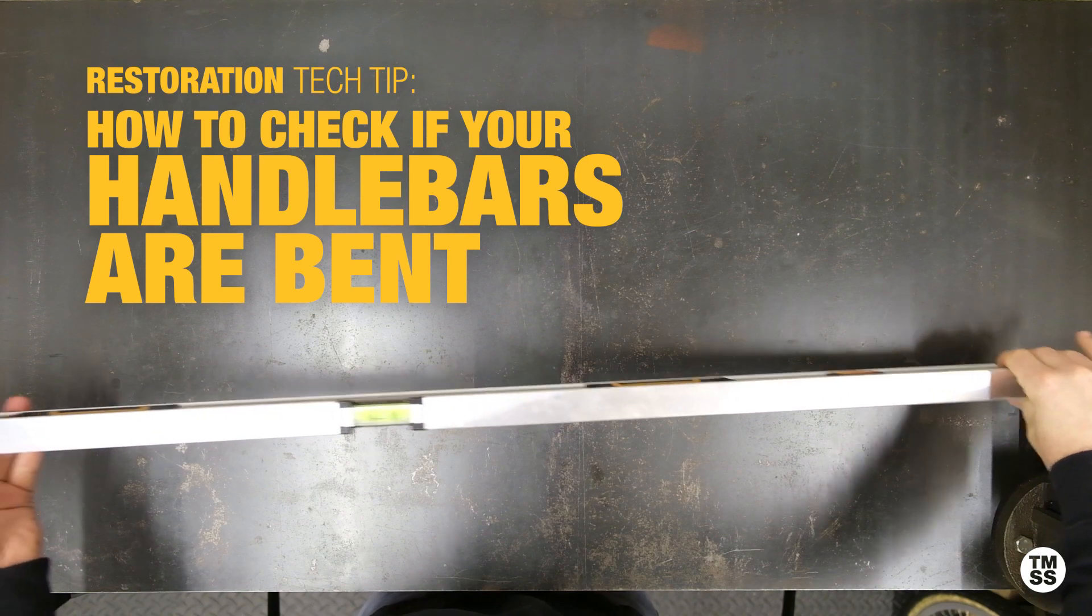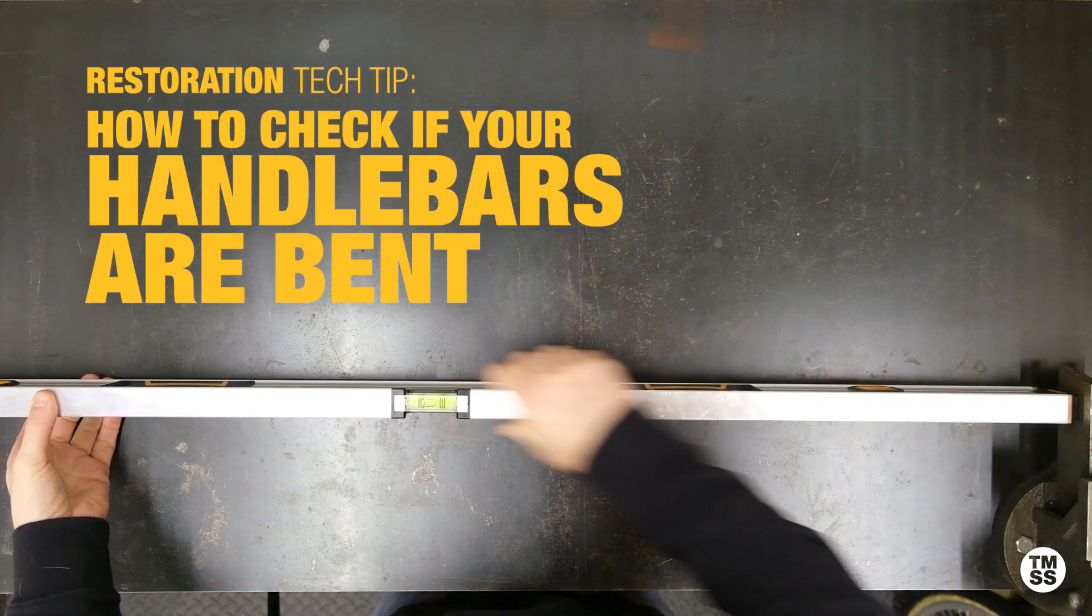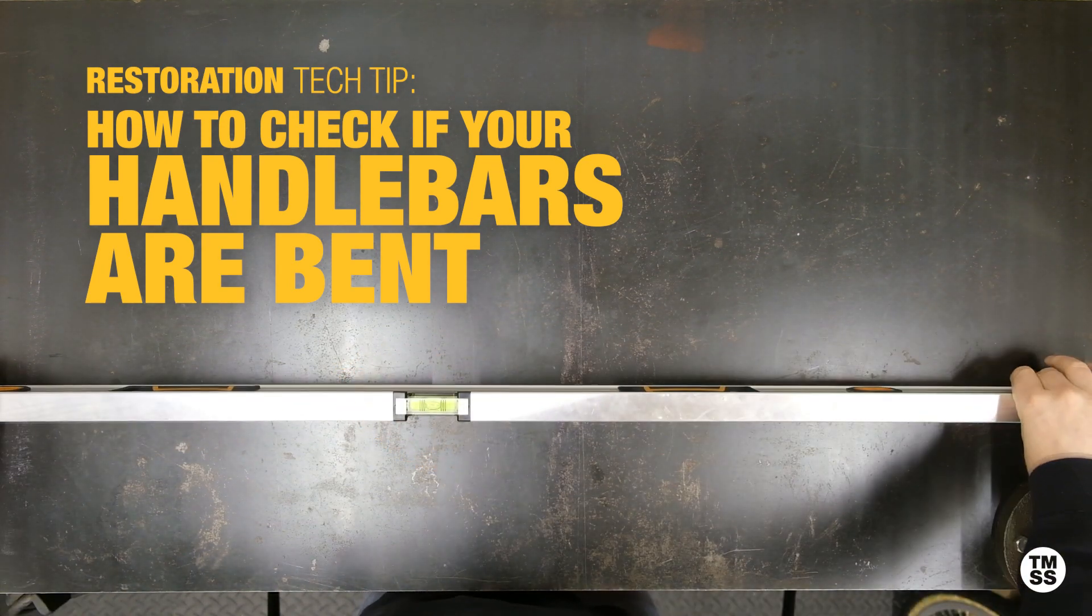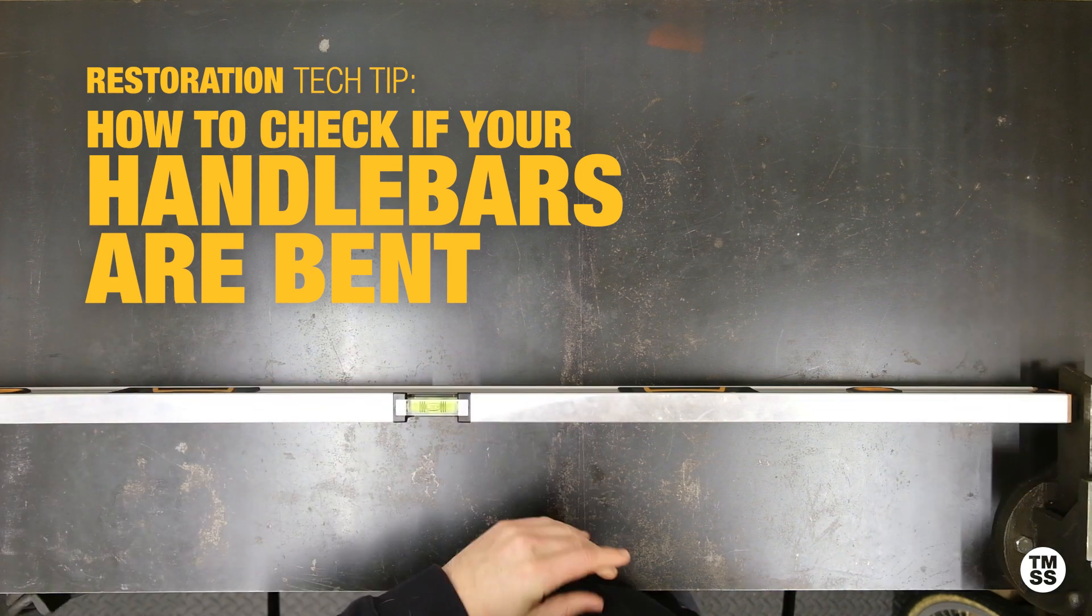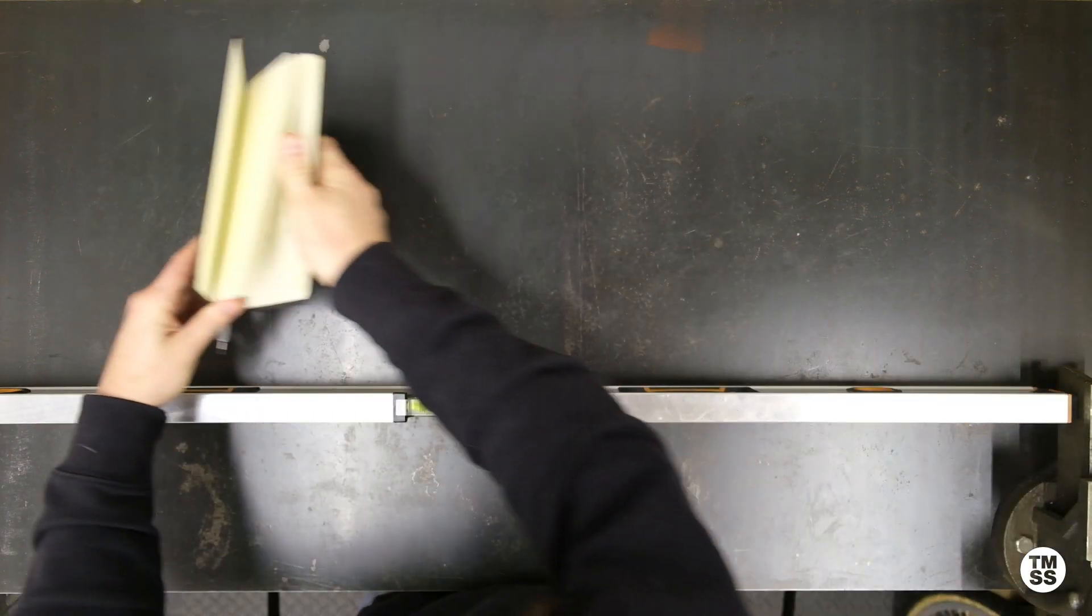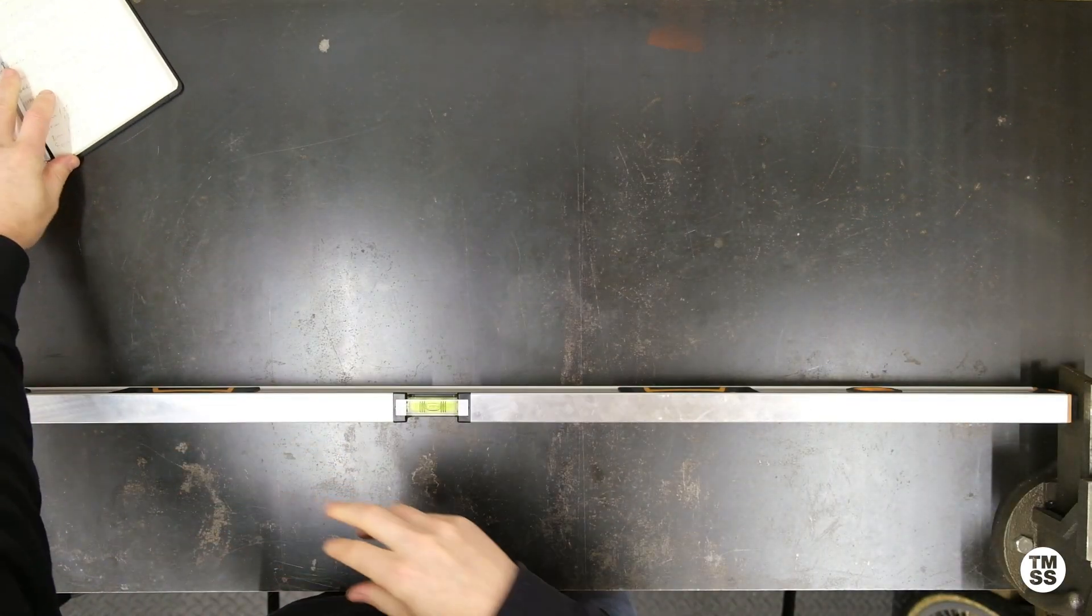To prevent any issues with your build further down the line, I'm going to show you a quick and easy way to check if your handlebars are bent. All you're going to need is a straight edge and a ruler, and you can measure with a pretty good degree of accuracy if the bars are straight or not.